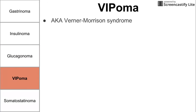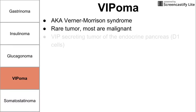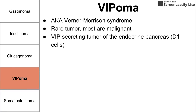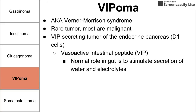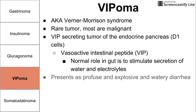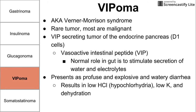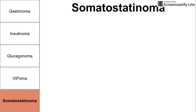Next is VIPoma, also known as Werner-Morrison syndrome. It is a rare tumor and most are malignant. By definition it is a VIP-secreting tumor of the endocrine pancreas, coming from the D1 cells. Vasoactive intestinal peptide (VIP) normally stimulates secretion of water and electrolytes in the gut, so somebody with too much VIP presents with explosive and profuse watery diarrhea. This results in low hydrochloric acid, low potassium, and dehydration.